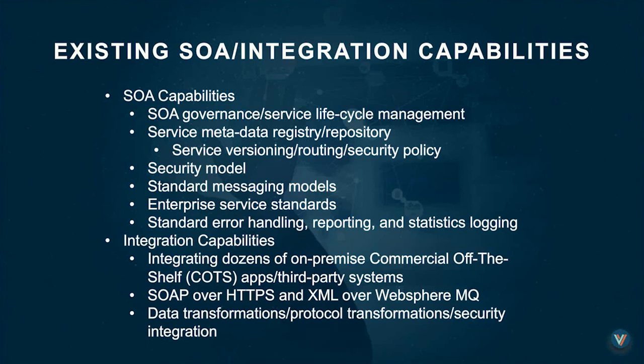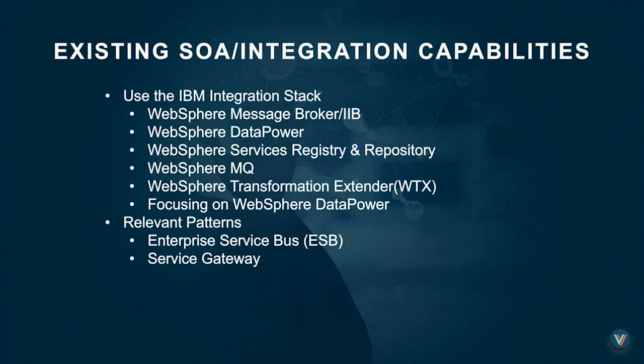This organization's starting point was the IBM integration stack: WebSphere Message Broker (now called IIB), WebSphere MQ, Datapower, WebSphere Services Registry and Repository, and WTX. This presentation does focus on what WebSphere Datapower was being used for across a couple of different patterns. The relevant patterns are the enterprise service bus and the service gateway — basically right out of the IBM Redbooks. Anybody in an IBM shop or familiar with IBM Redbooks should find what we're describing here very familiar.